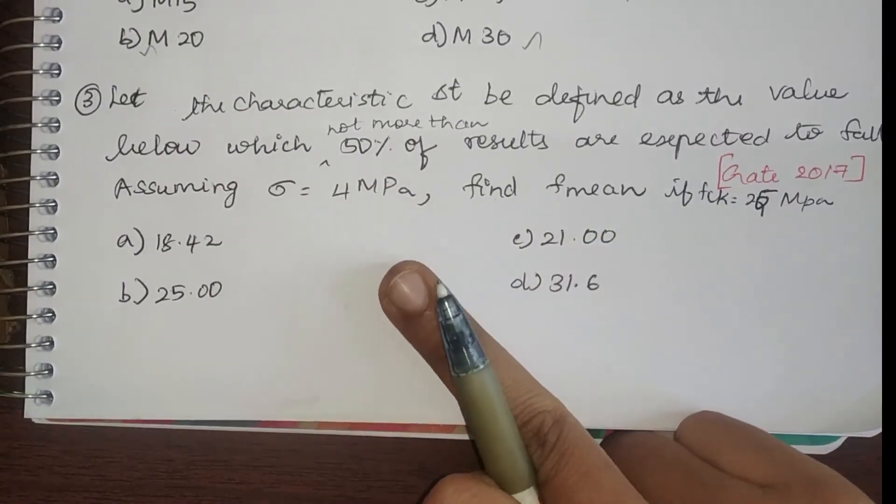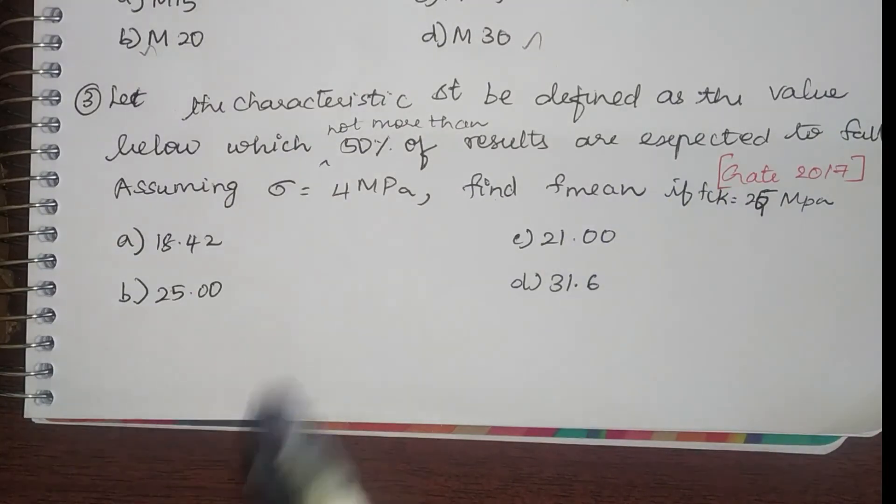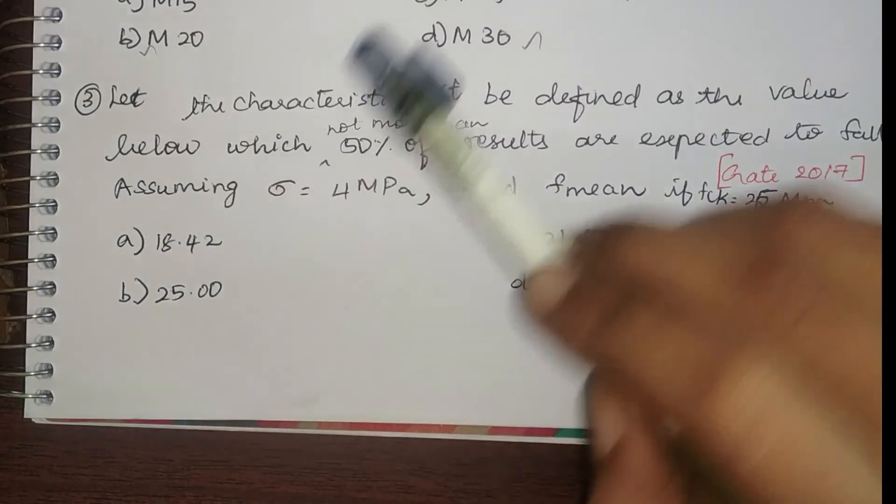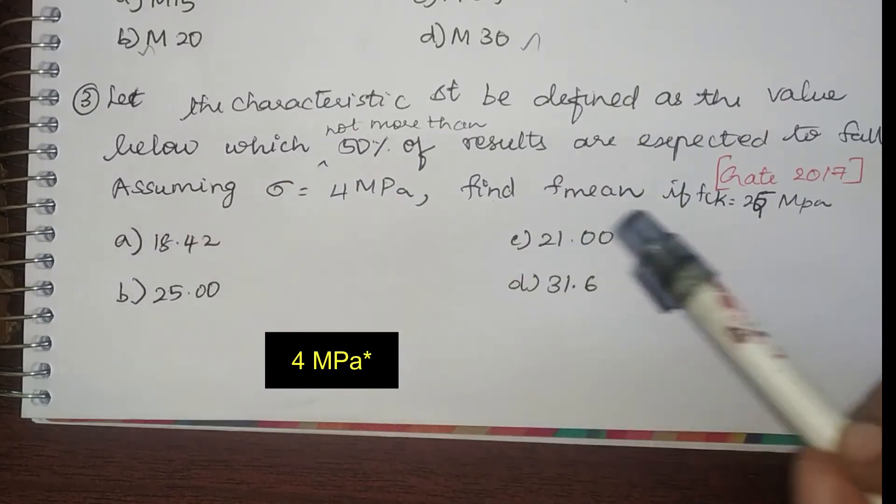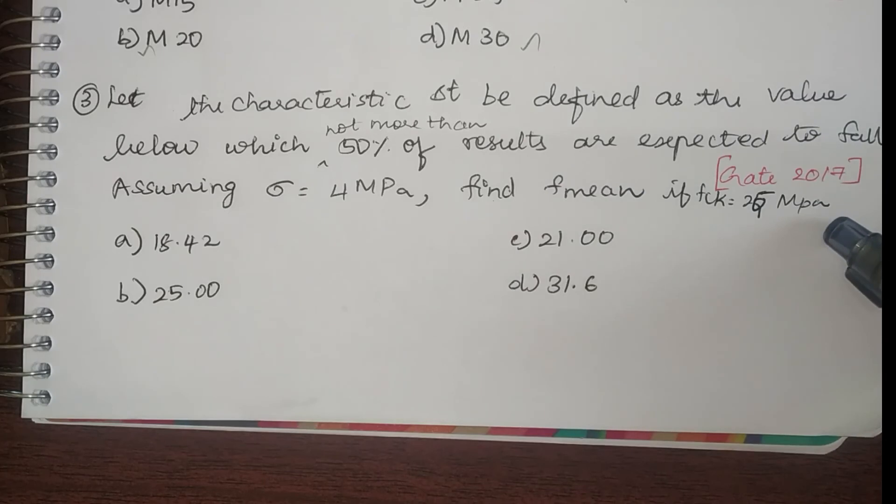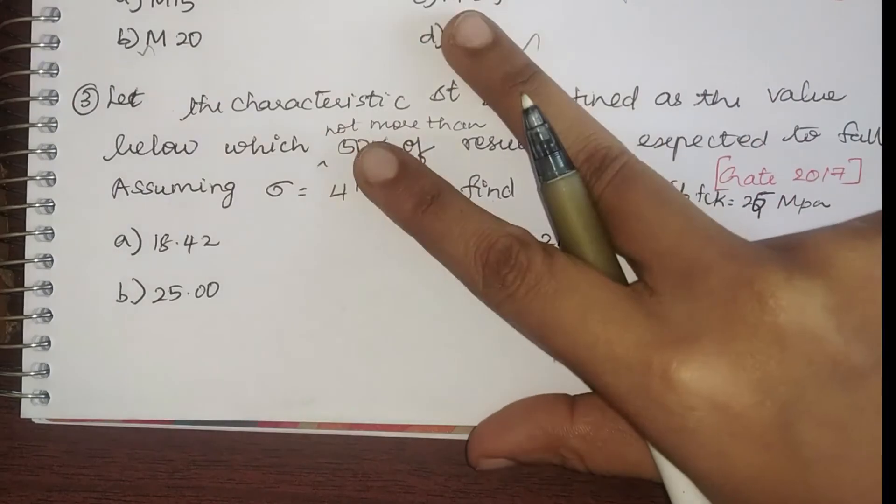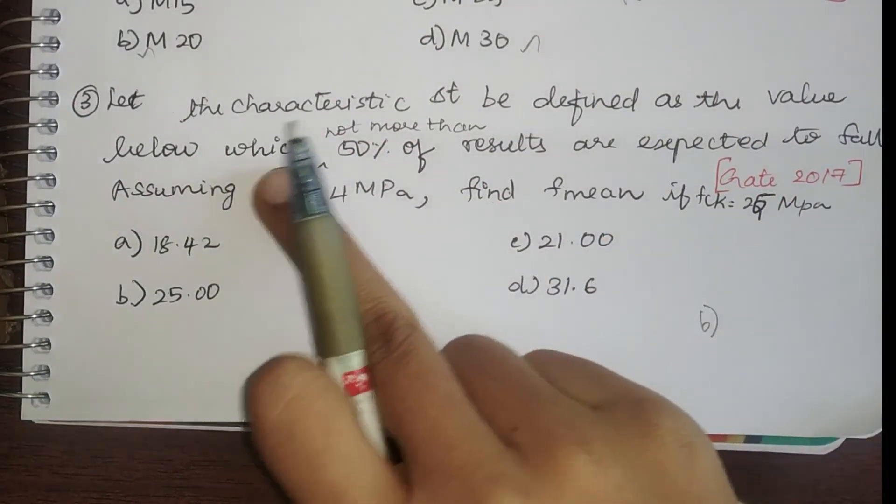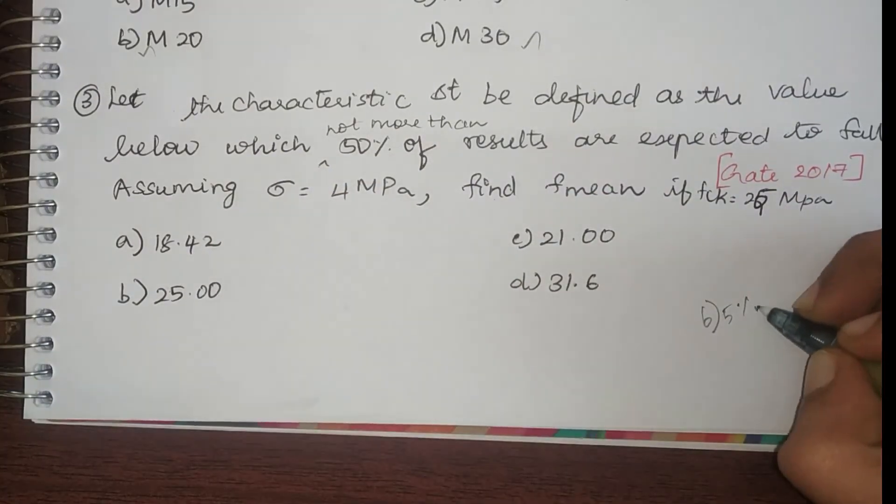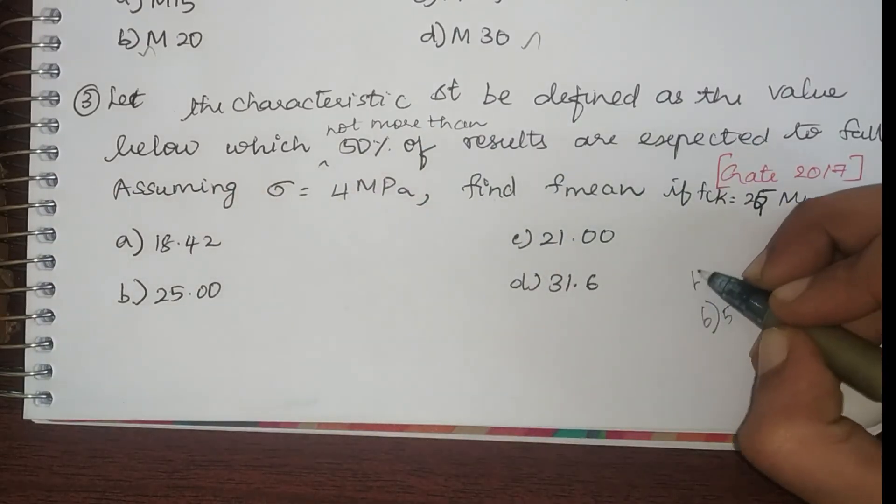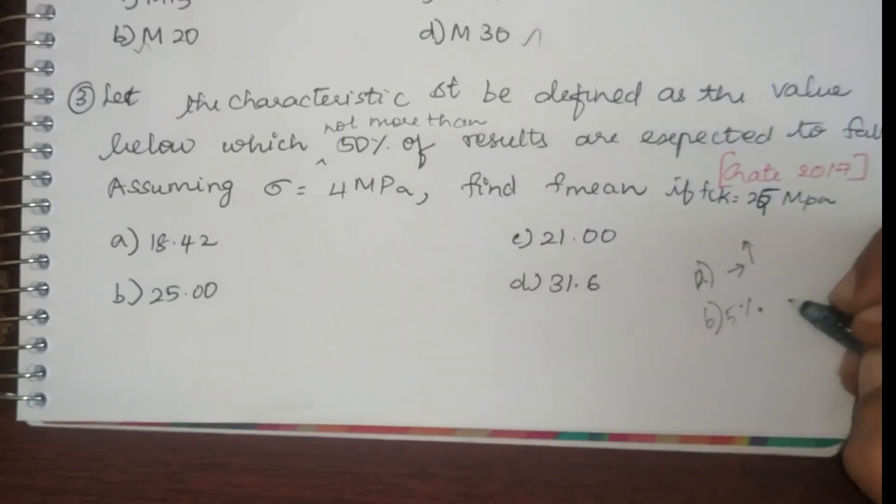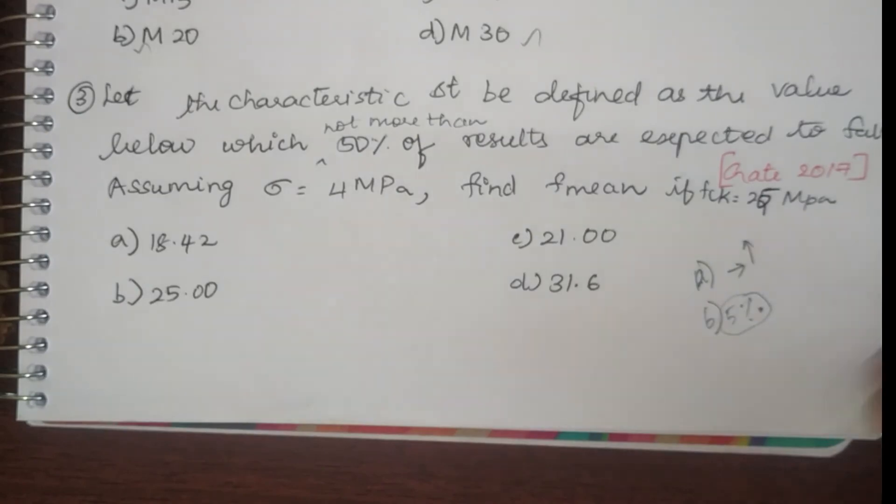Next question, this is for you guys to solve. Solve it and comment the answers below. The question is: let the characteristic strength be defined as the value below which not more than 50 percentage of test results are expected to fall. Assuming standard deviation is 40 MPa, find f mean if fck is equal to 25 MPa. So I'm sure you guys would be able to answer this in just a second, but let me go one step ahead and I want you to find answers for two things. One for this one, and for option b, the percentage value is changed to 5 percentage. So it is defined as the value below which not more than 5 percentage of the results are fault. So I want you guys to comment two answers below. A is for the given question, B is for a modified question where 5 percentage is taken.